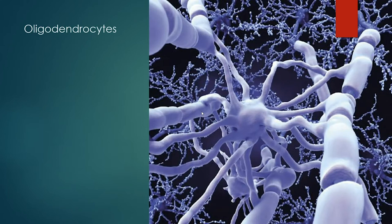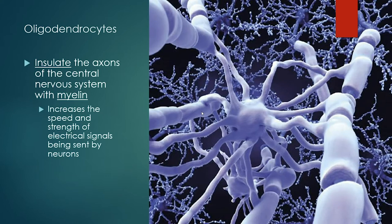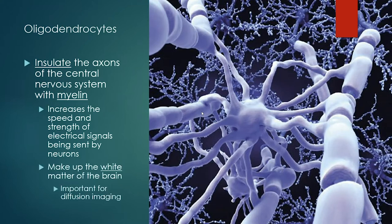Oligodendrocytes are extremely important — these are the cells that insulate the axons of neurons. They have projections that wrap around the wiring of neurons and insulate them just like insulation on a wire, allowing electrical signals to be sent really fast and efficiently. This makes up the white matter in the brain. White matter takes up a lot of real estate. There's a specific type of MRI called diffusion imaging that lets us take pictures of all those wires and see how different brain regions are connected. Oligodendrocytes provide the pathway that makes that possible.